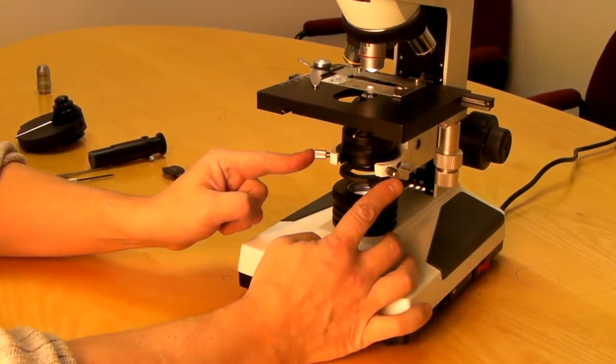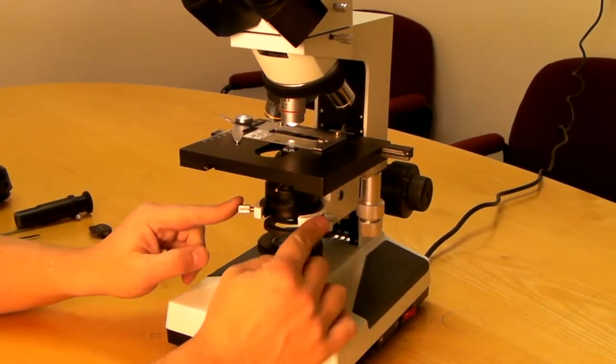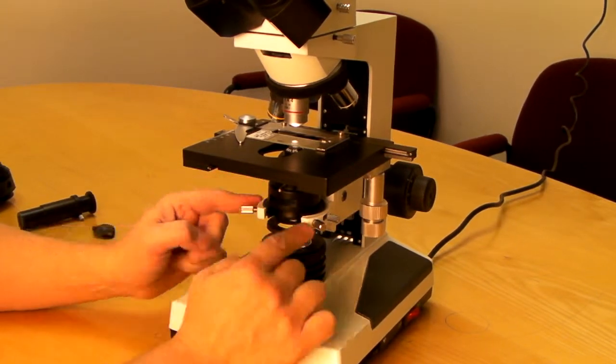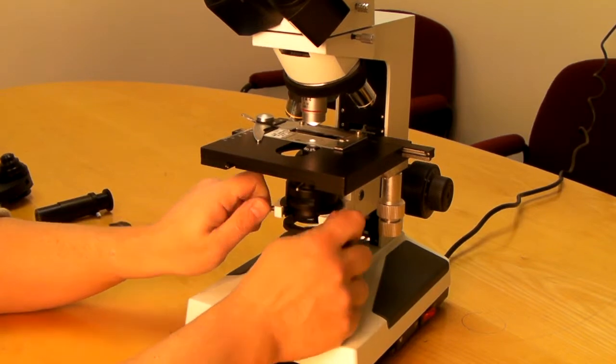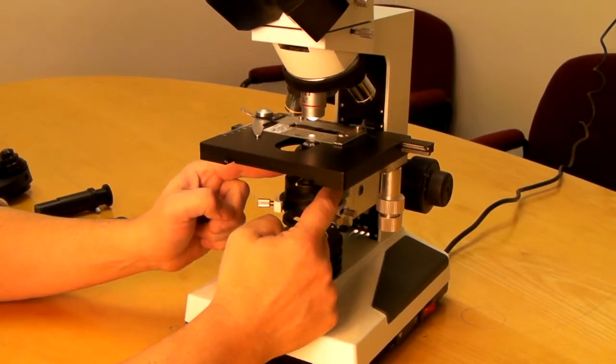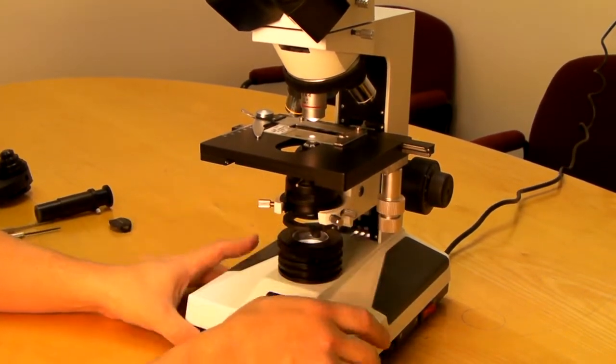Second, there's two screws that can be used to center the condenser position in its holder. By rotating both of them at the same time, you can manage to put the condenser in center.